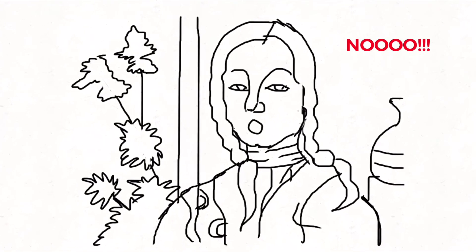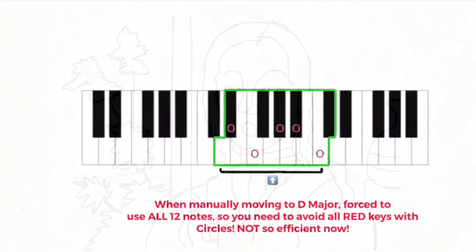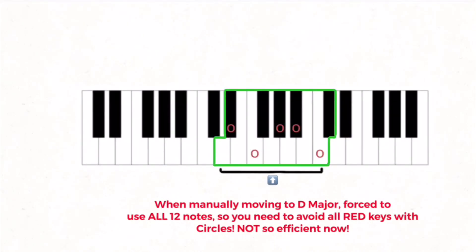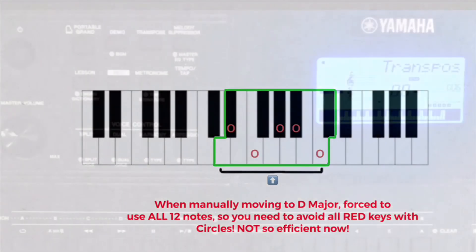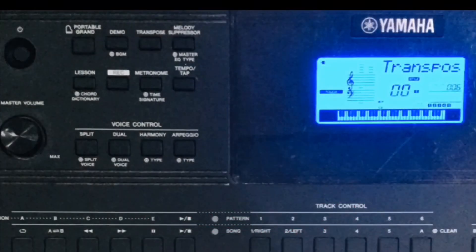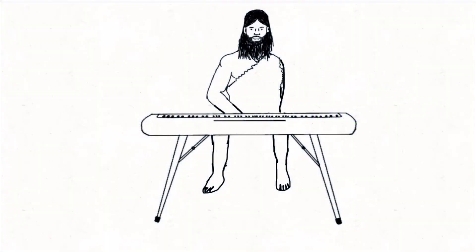So you had to learn to use the piano with the black keys, using all 12 notes again. It's a good thing that now, we have the technology to just press a button and move or transpose the pitch, and voila, I am a musical genius, said the caveman.